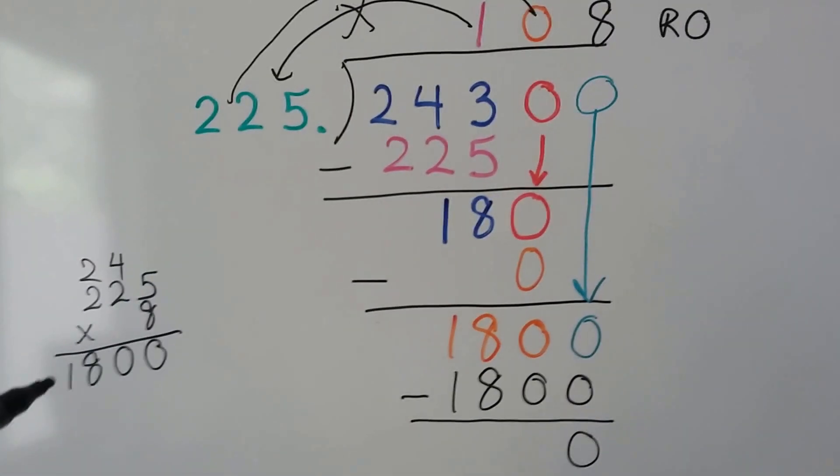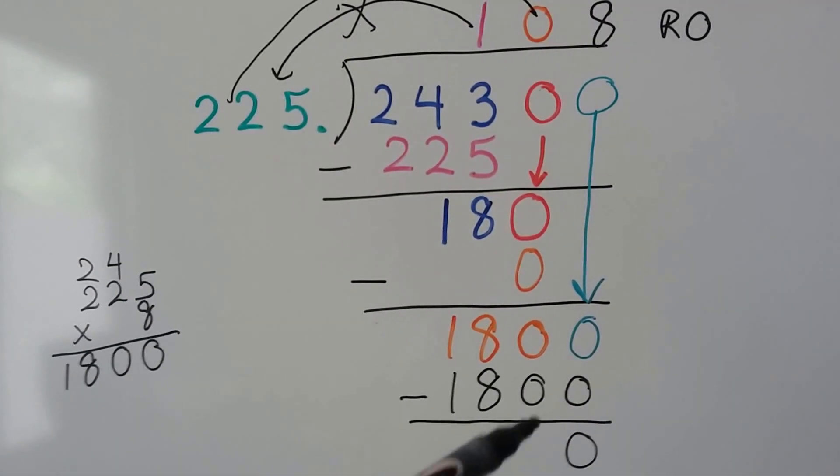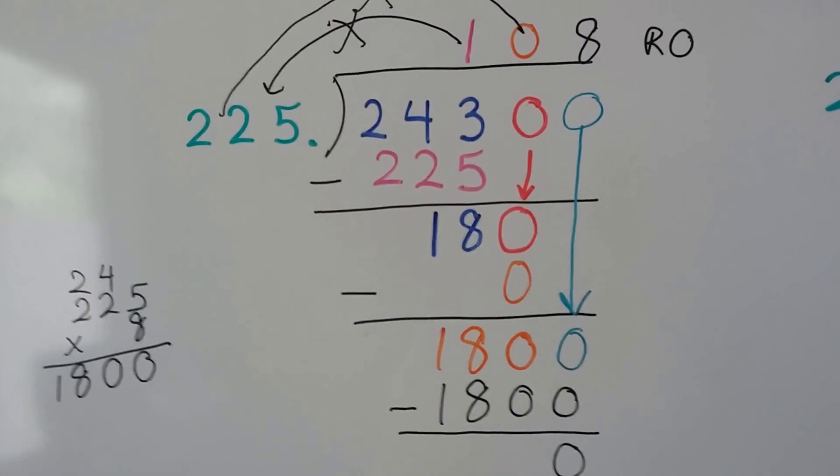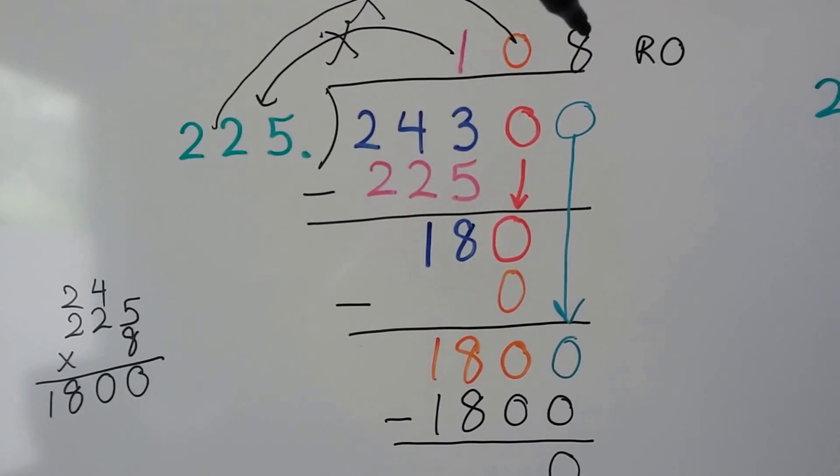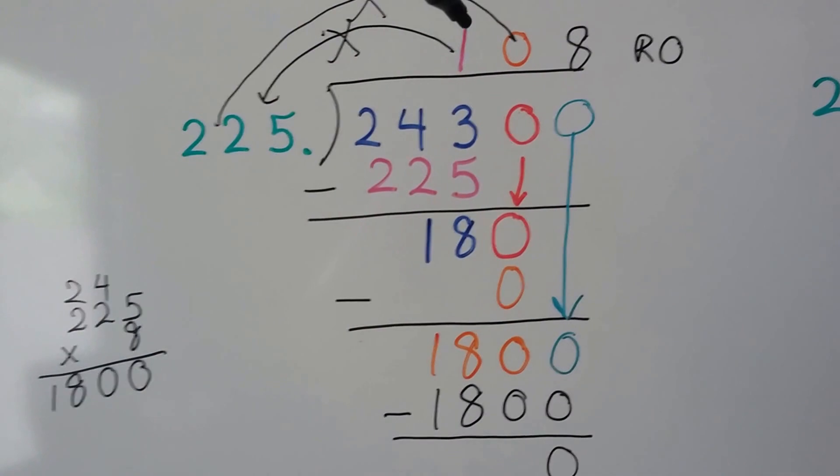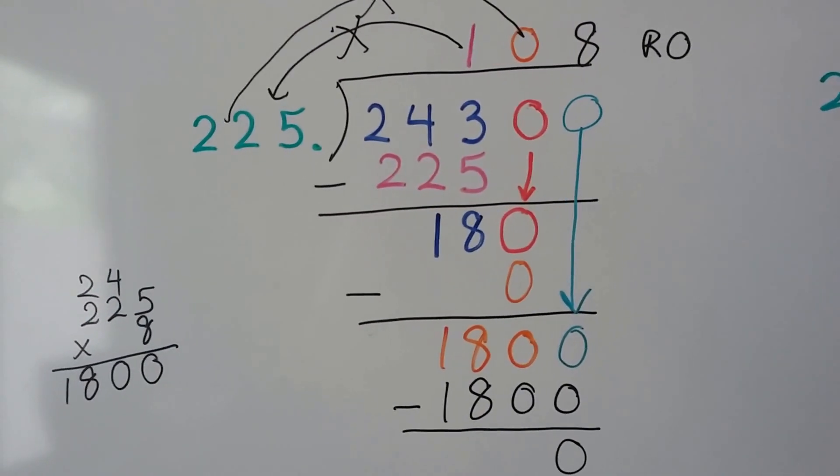225 goes into 1,800 eight times, like you found out, and that's going to give us a zero remainder. And we put the eight up here, and our answer, our quotient, is 108 remainder zero.